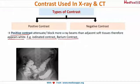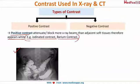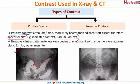Examples of positive contrast are iodinated contrast and barium contrast. Here you can see an image of positive contrast — this structure is appearing more radiopaque, meaning it is attenuating or blocking more X-ray beams, which is why it appears white.